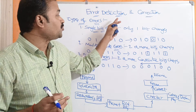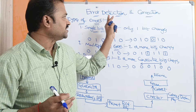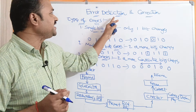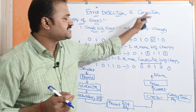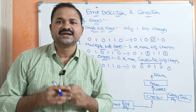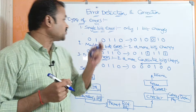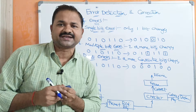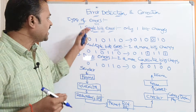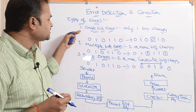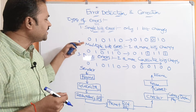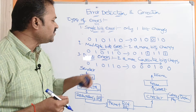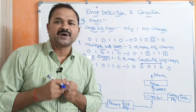We can control errors in two ways: the first way is error detection and the second way is error correction. First, let us see what are the different types of errors. We have three types of errors: single bit error, multiple bit errors, and burst errors.